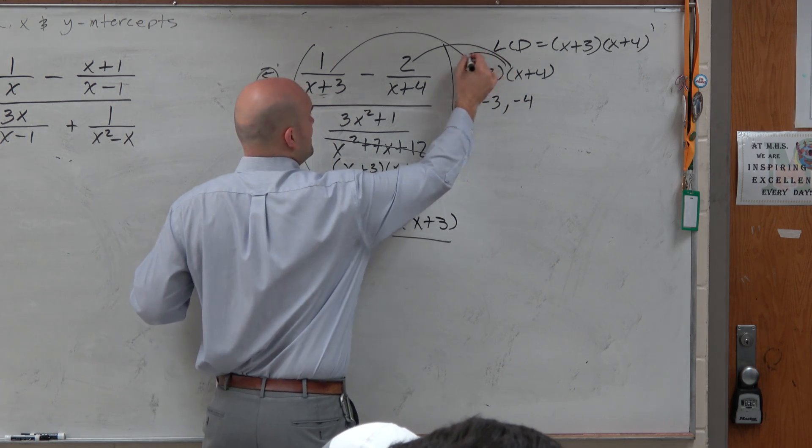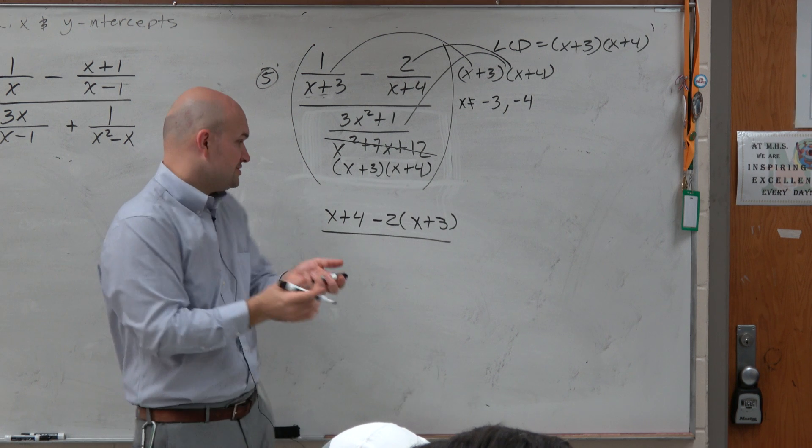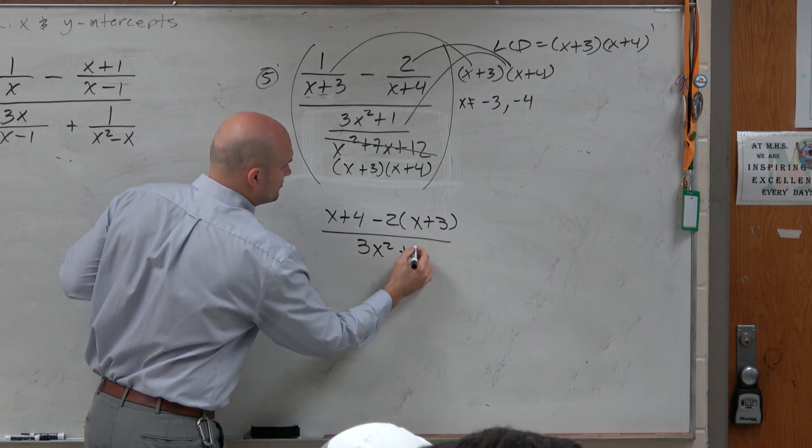And then when you multiply this times the denominator, you can see that both of them divide out, right? So you're just left with 3x squared plus 1.